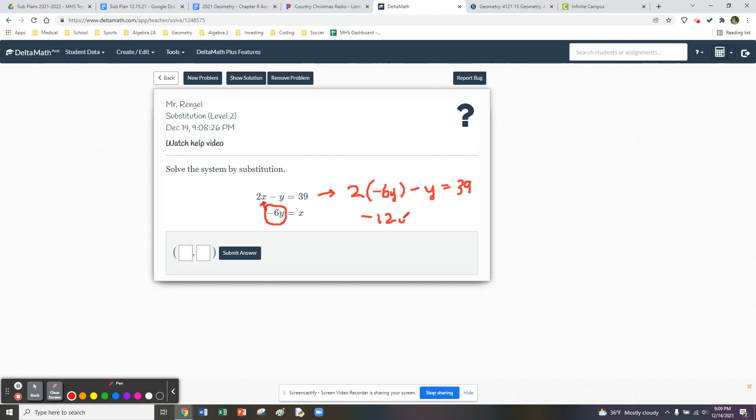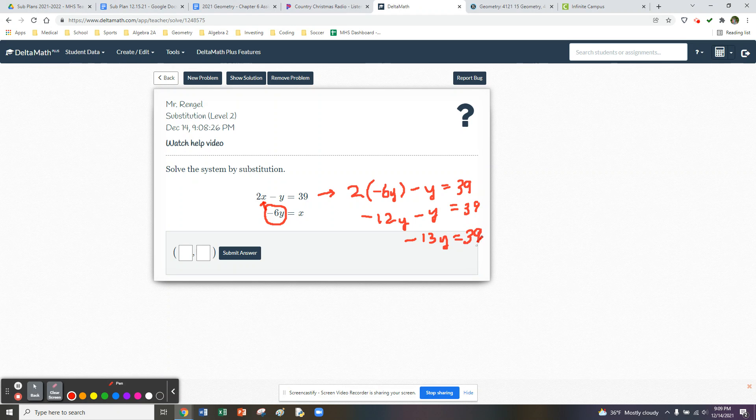We'll get negative 12y minus y equals 39. We'll combine terms. We've got negative 13y equals 39. Then we can divide by negative 13, which gives us y is equal to negative 3.